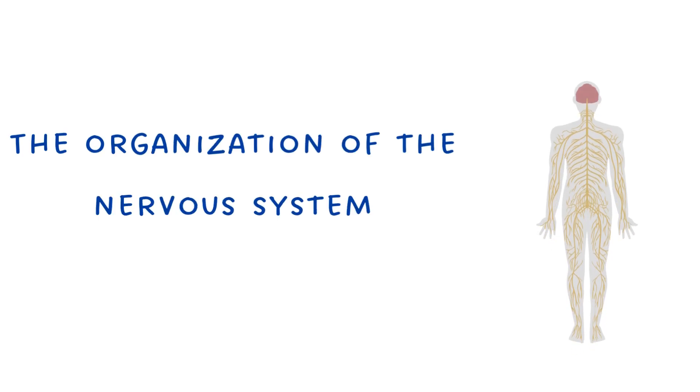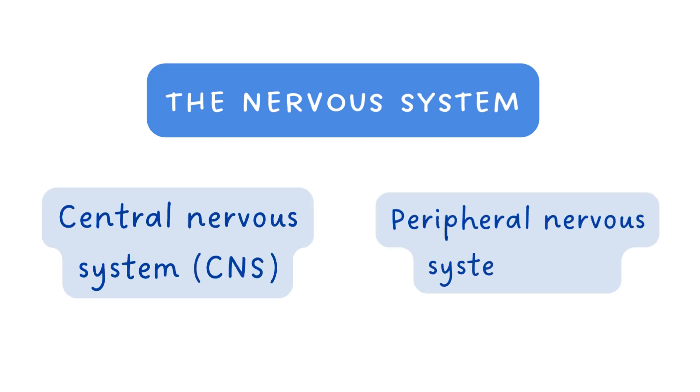The Organization of the Nervous System. The nervous system is organized into two main parts: the central nervous system (CNS) and the peripheral nervous system (PNS).